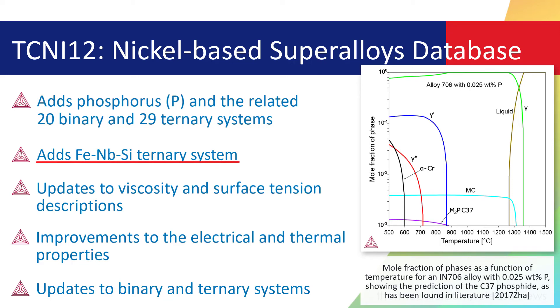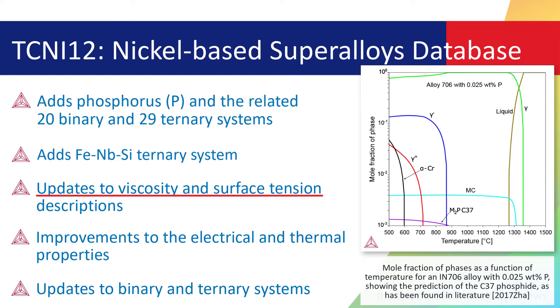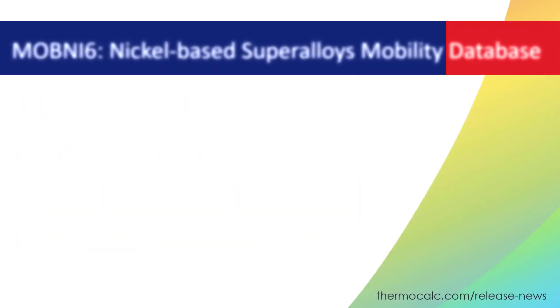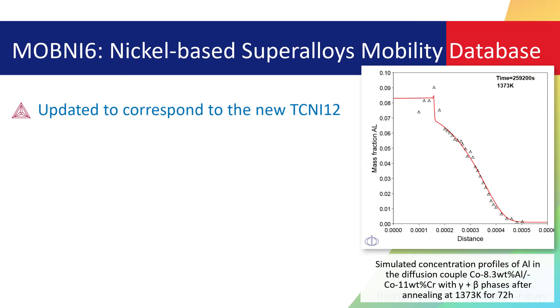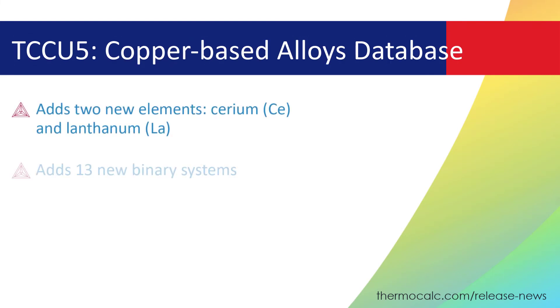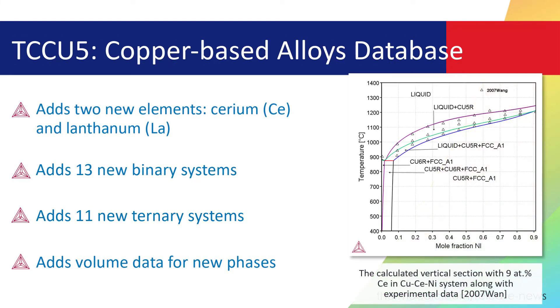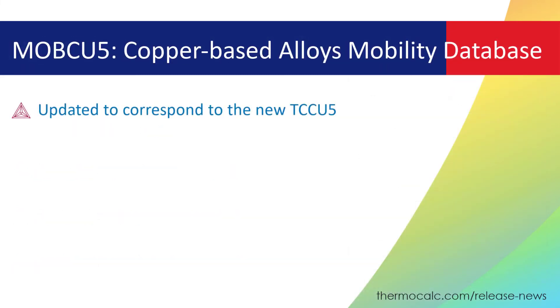TCNI12 also adds the iron-niobium-silicon ternary system, updates to the viscosity and surface tension descriptions, improvements to the electrical and thermal properties, and more. The companion mobilities database, MOB-NI6, is updated to correspond to TCNI12. The 2022b release also includes a new version of our copper-based alloys database, TCCU5. The database adds two new elements, 13 binary systems, 11 ternary systems, and volume data for new phases. The companion mobilities database, MOB-CU5, is updated to correspond to TCCU5.